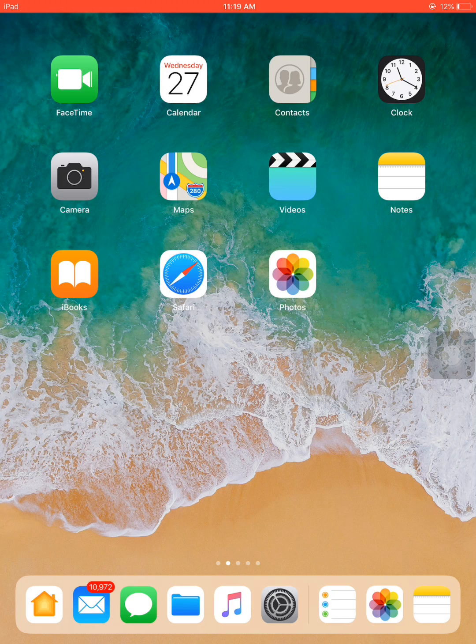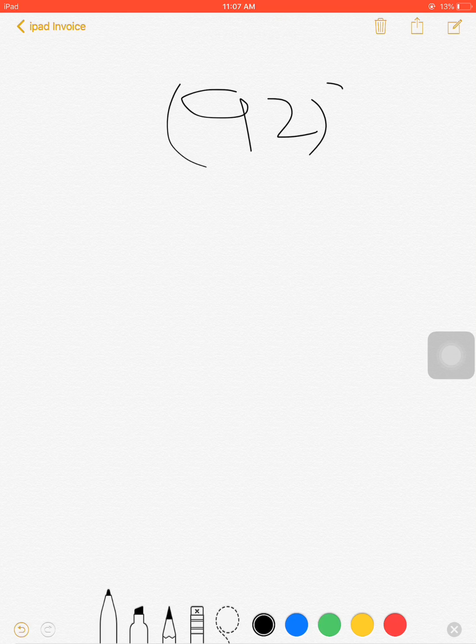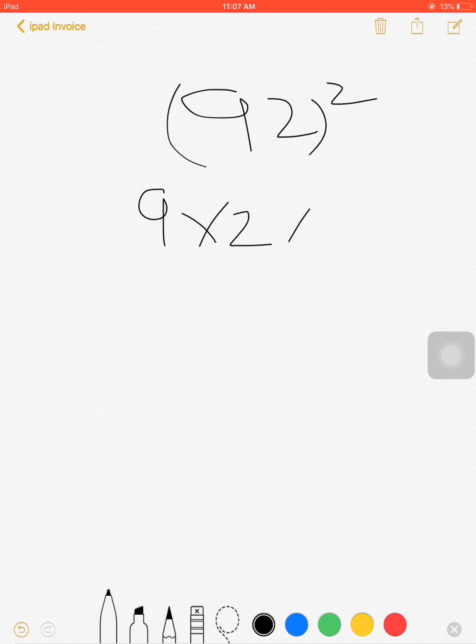Let's calculate the square of 92. This is a simple trick. First, write 92 and always multiply this number by 2. So 9×2=18, 18×2=36.